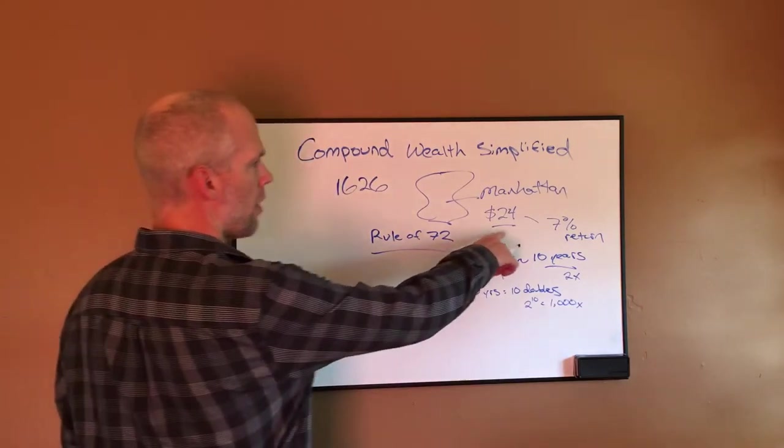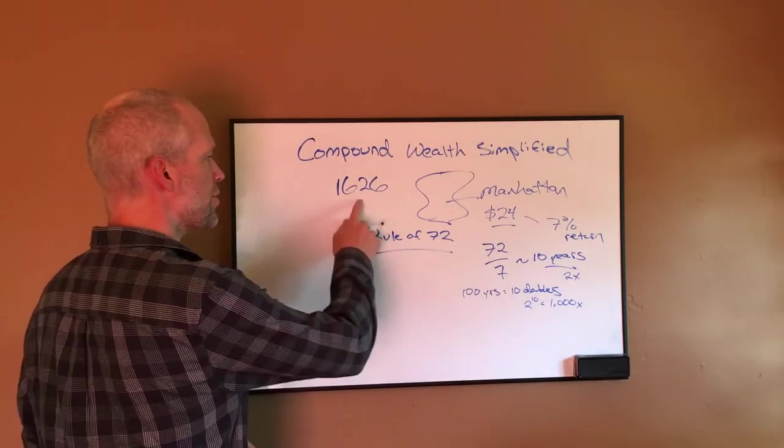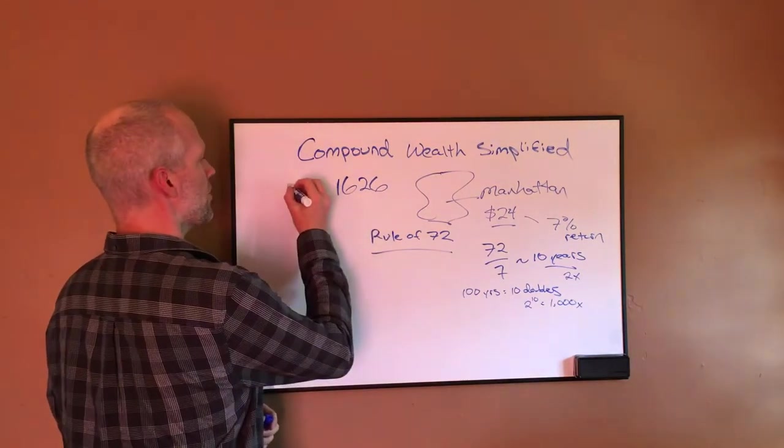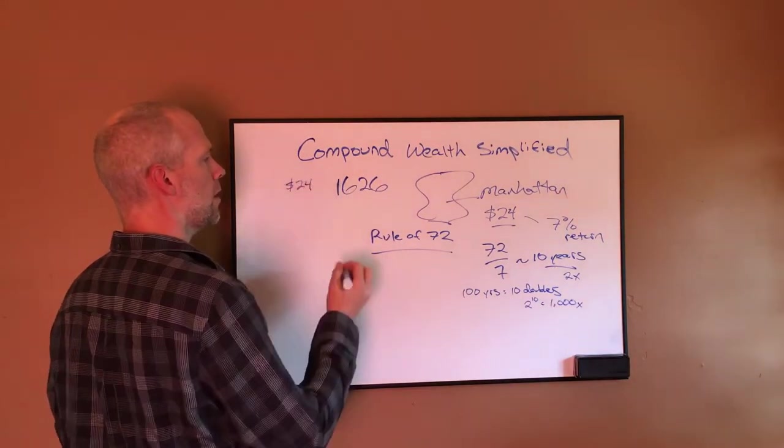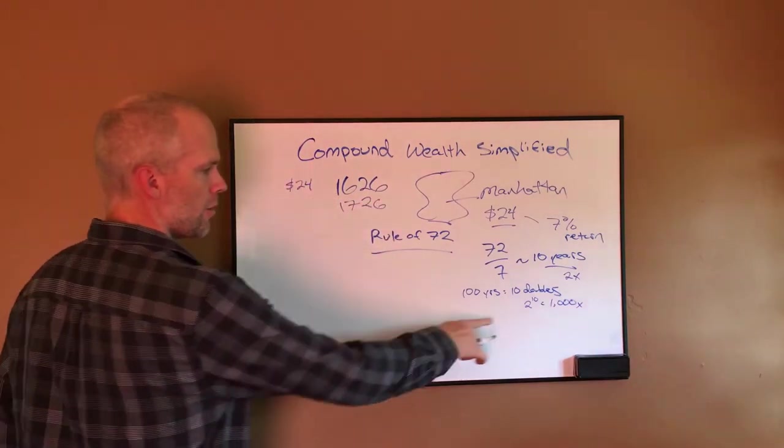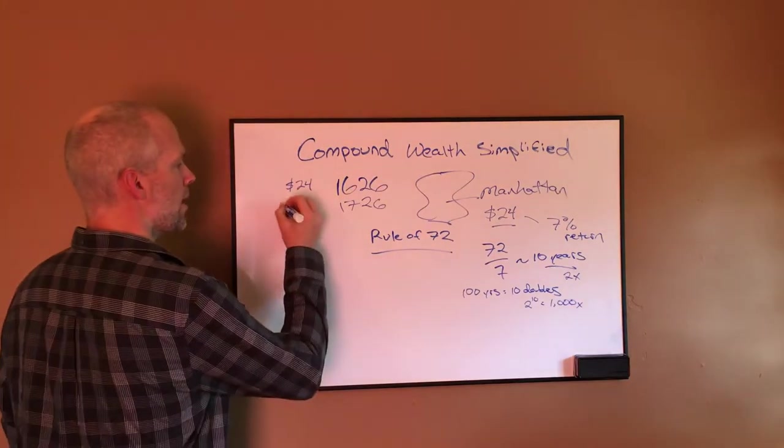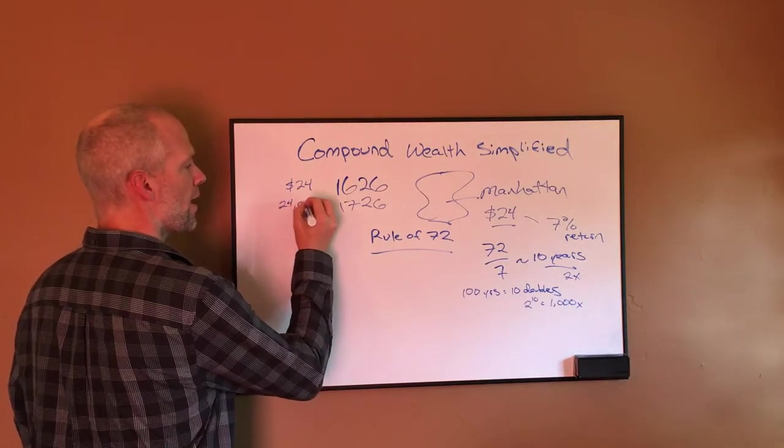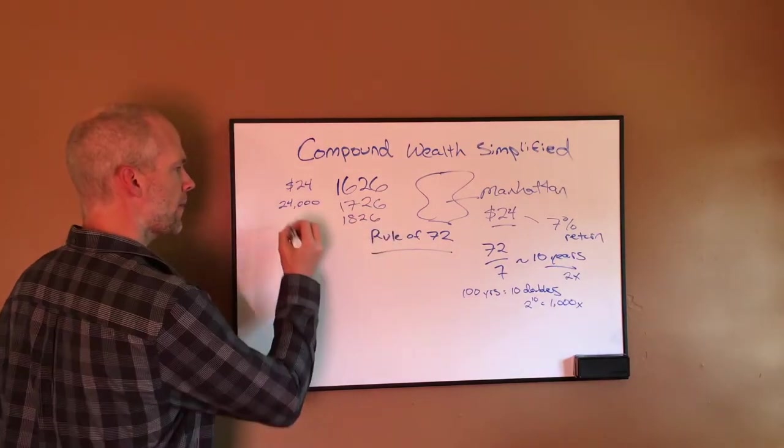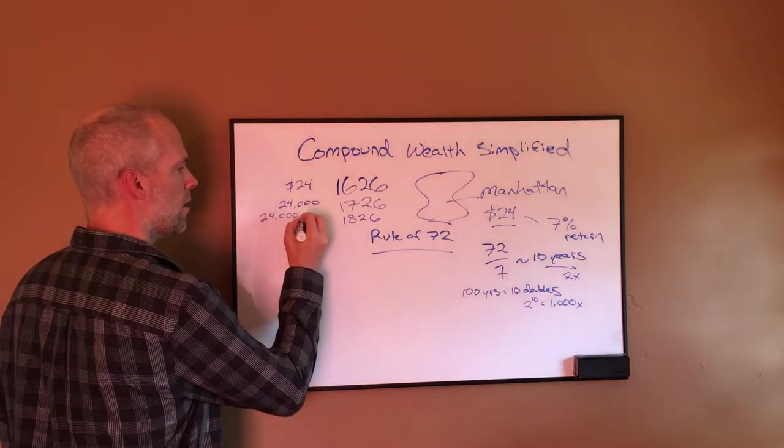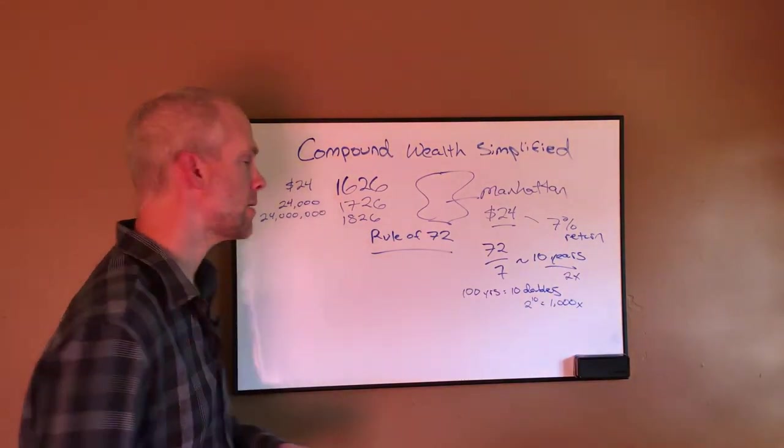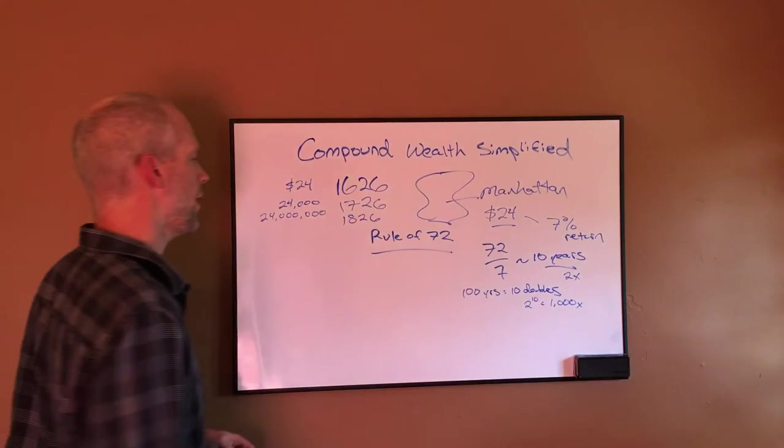So let's do the math here. If I start with $24 back in 1626, so we've got $24 here. By 1726, I've got 100 years. I've got 1,000 times my money. So now I'm at $24,000. By 1826, I'm at 24 million. This is just a 7% rate of return, guys. Over 100 years, 1,000 times my money.